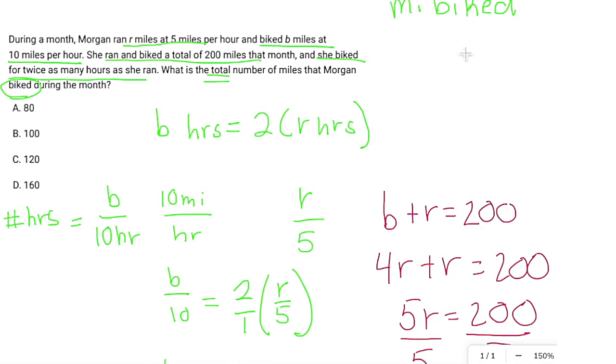But we're looking for miles biked. So we got to go back and do one final equation here, which is B plus 40 equals 200. So therefore, B equals what's 200 minus 40? 160. If that feels difficult, always use Desmos. And there we go. D.